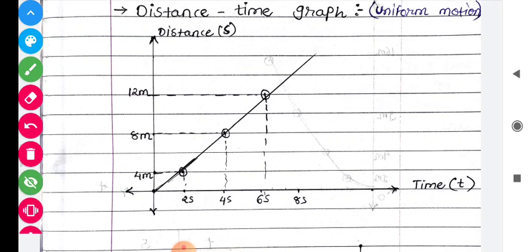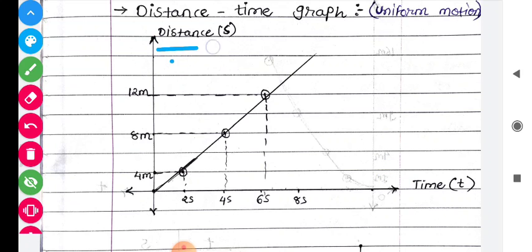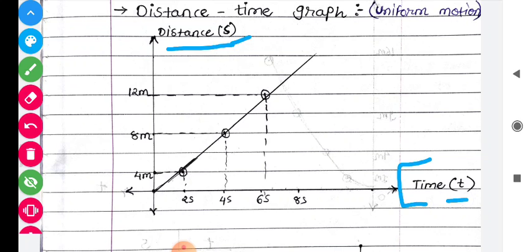Sabse pehle, graph ke andar do axis hoti hain. The vertical axis is known as the y-axis and the horizontal axis is known as the x-axis. So on the y-axis I take the variable distance 's', and on the x-axis I take time 't'. Distance is denoted by 's' and time is denoted by 't'.